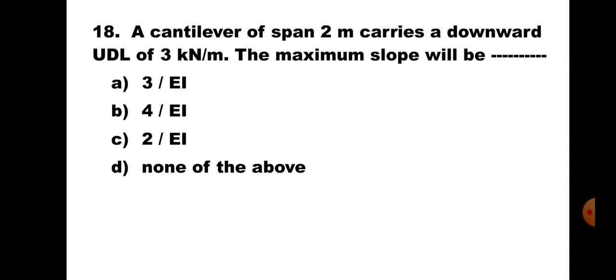Question number 18. A cantilever of span 2m carries a downward UDL of 3kN/m. The maximum slope will be: A. 3/EI, B. 4/EI, C. 2/EI, D. None of the above. This is the standard case of a cantilever carrying a UDL on the entire span. Maximum slope is WL³/6EI. Putting all the values, you will get the answer as 4/EI. Hence, the correct answer is B. 4/EI.